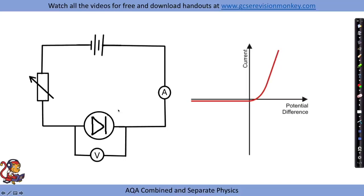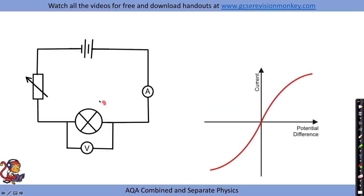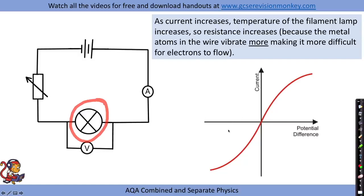A diode only lets current flow in one direction, so its graph has no values in the negative region — only in the positive region. For a filament lamp, the graph has a different shape again, because as current increases, the temperature of the filament also increases, so resistance increases. You can see the graph tailing off as current gets higher: the lamp gets very hot, the atoms in the wire vibrate more, making it harder for electrons to flow, so current can't increase at the same rate as before.